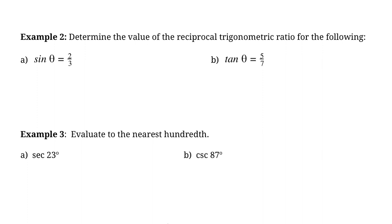For example 2, we're determining the value of the reciprocal trig ratio. If the sine of angle θ is 2 over 3, then the reciprocal of sine — cosecant — means cosecant θ is just the reciprocal, 3 over 2. And if tangent θ is given, the reciprocal of tangent is cotangent, so cotangent θ is 7 over 5.